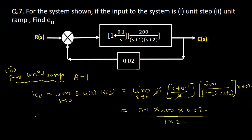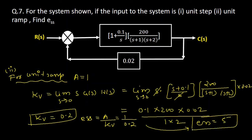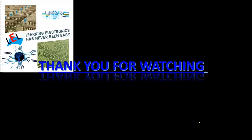Applying the limit as s tends to 0, we get 0.1 into 200 into 0.02 all divided by 1 into 2, giving Kv equal to 0.2. The steady state error for unit ramp equals the magnitude divided by Kv, which is 1 divided by 0.2, so the steady state error for unit ramp equals 5. These are the solutions for question 7 using the steady state error coefficient method. Thank you for watching and please subscribe for more updates.